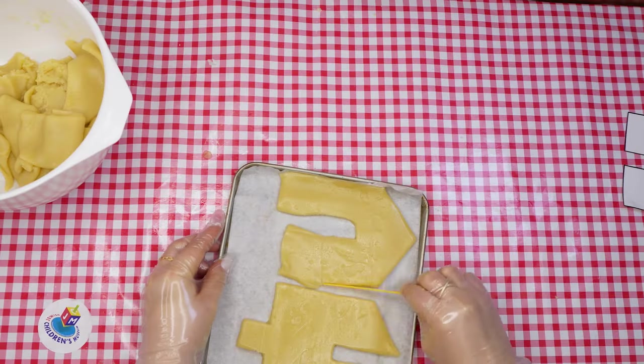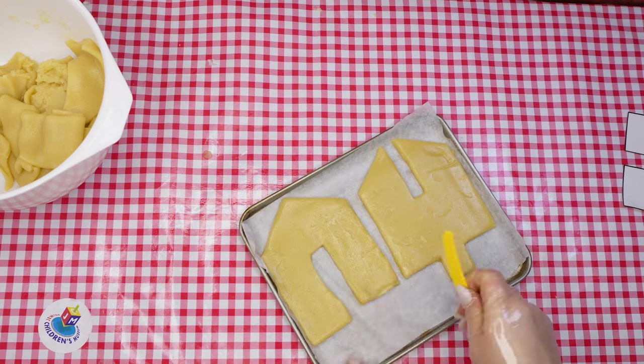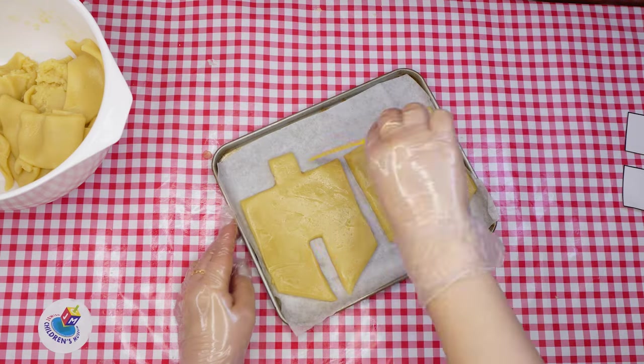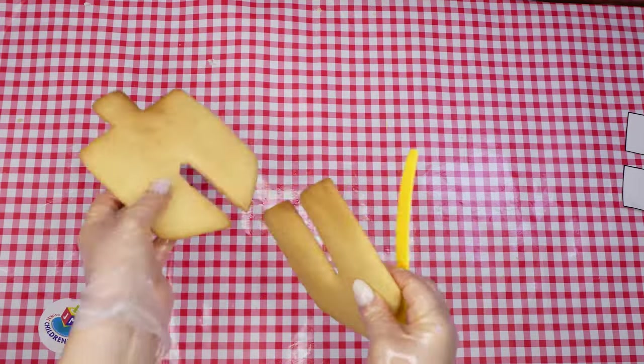If either of the cookies got a little out of shape in the process of transferring them, you can use the knife to fix that. Bake for 12 to 15 minutes until slightly brown on the edges. And now for building our 3D dreidel.